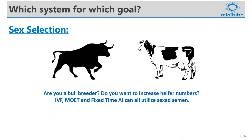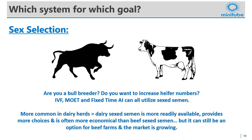If you're wanting to breed for sex selection, IVF, flushing, and fixed time AI can all utilise sexed semen. However, it's more common in dairy herds, so dairy sexed semen is a lot more readily available, with a bigger selection of sire choices and often more economical than beef sexed semen. There is still beef sexed semen available and it is a growing market, so it is something you can use if you want to.